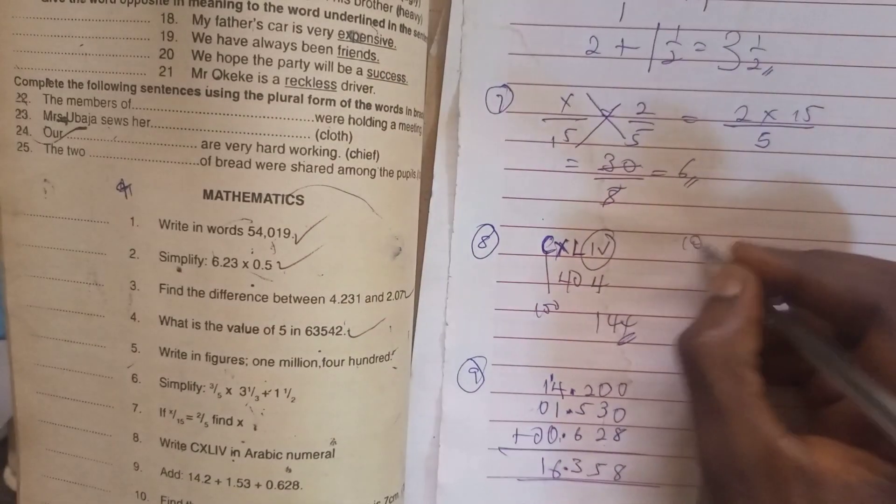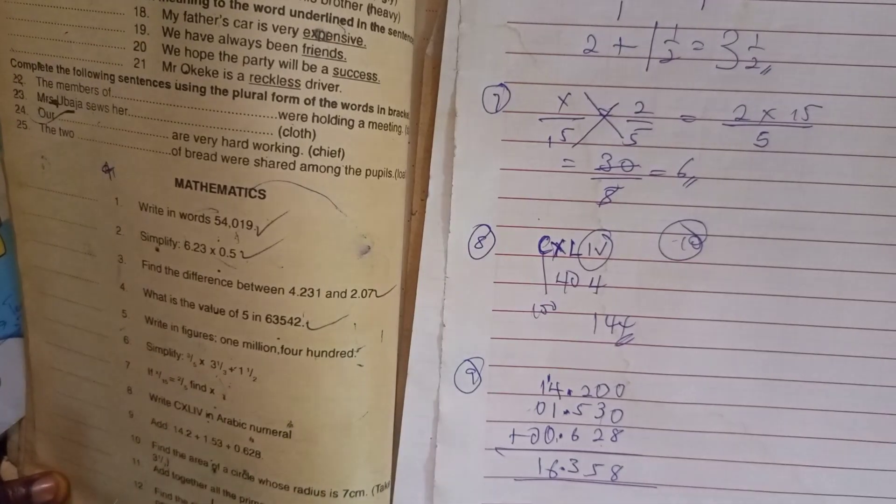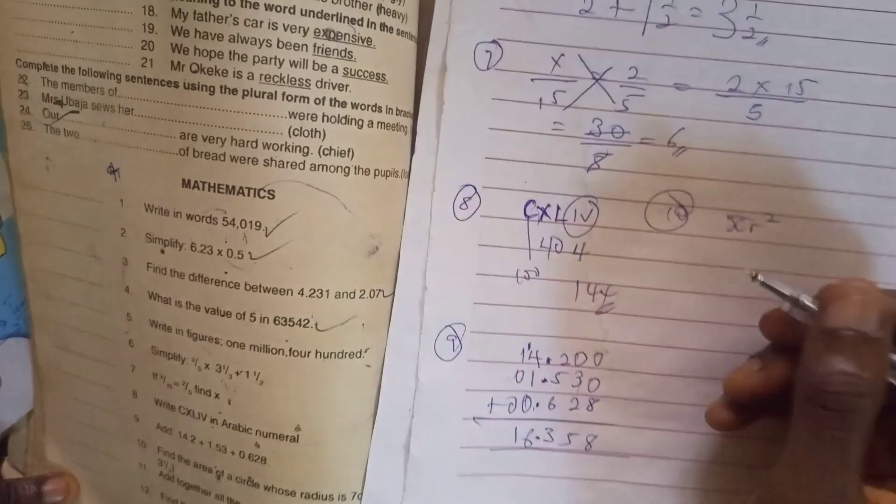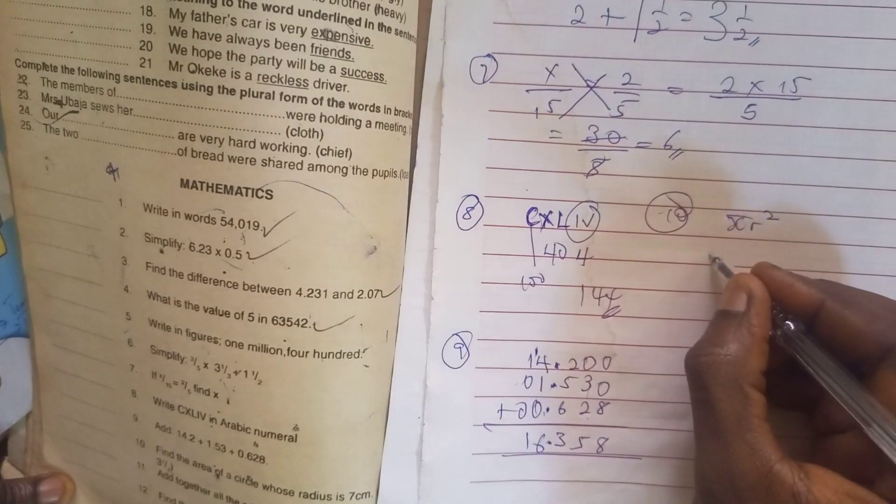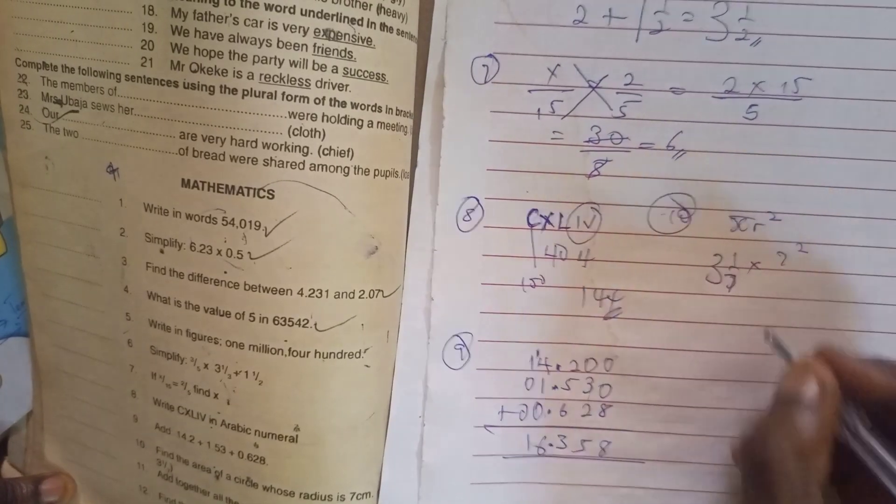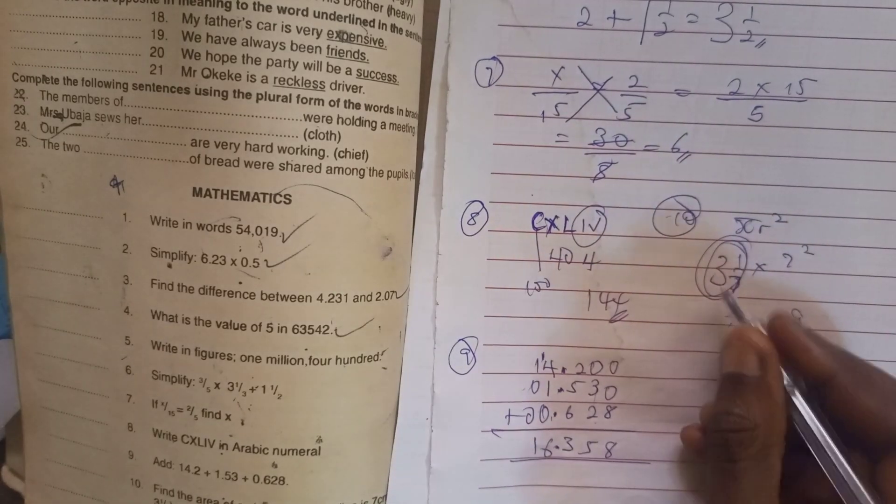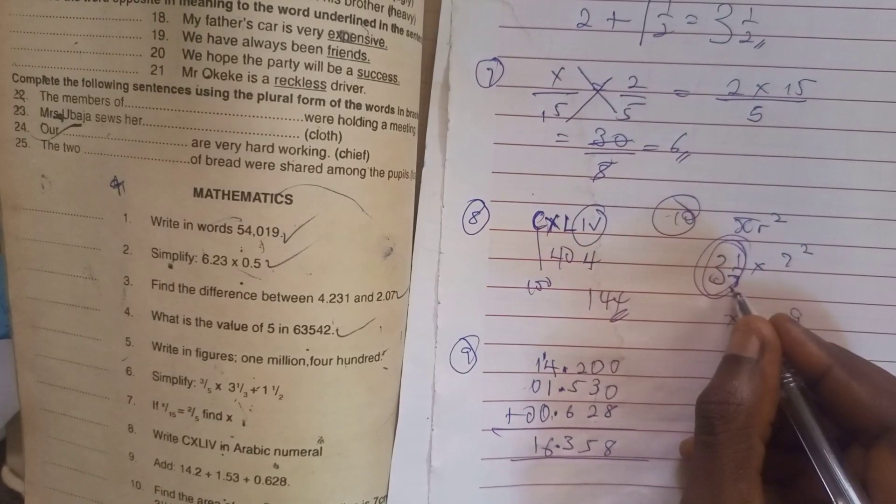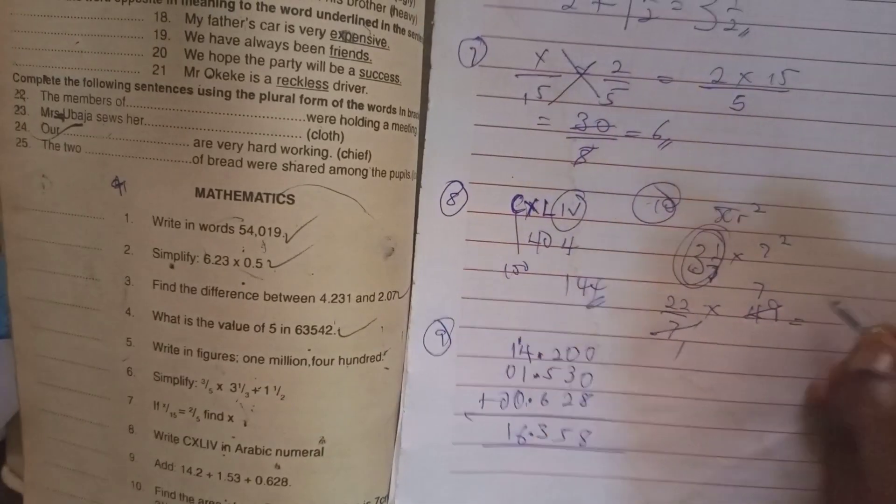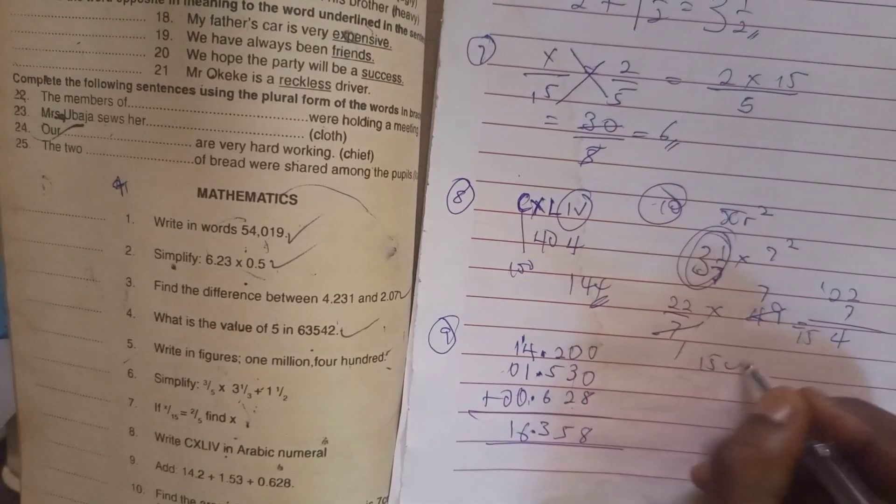Now the next one is number 10, which says find the area of a circle whose radius is 7 cm. Take pi as 3 whole number 1 over 7. So the area of a circle is pi r squared. The pi is 3 whole number 1 over 7 times the radius there is 7 squared. 7 squared is 49 times. Change this to improper fraction. 3 times 7 will give us 21, that is 22 over 7. Divide this and divide this, we have 7. 7 times 22 is 154. That is the answer.